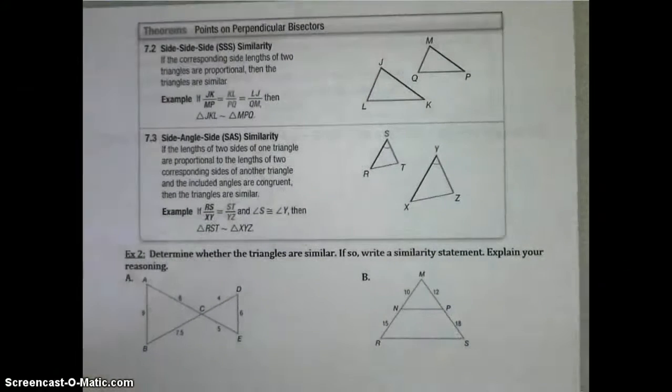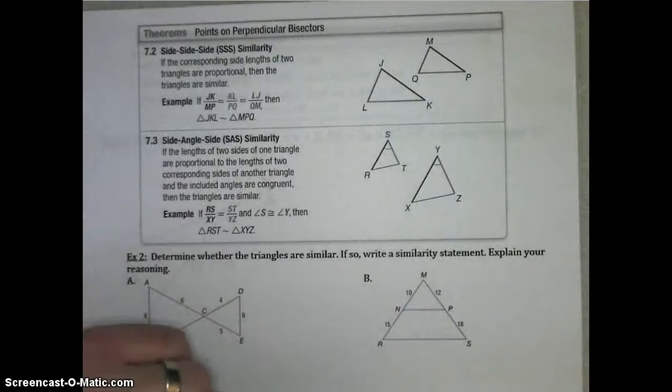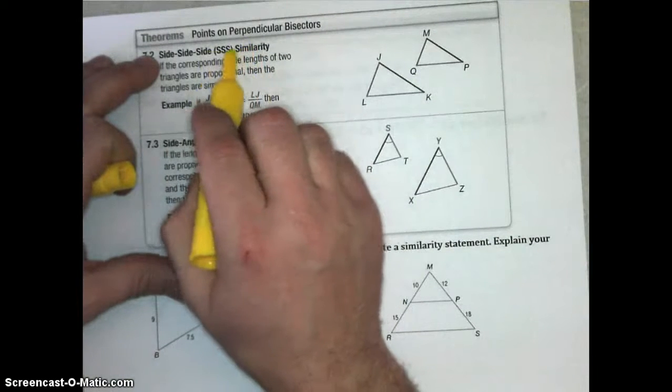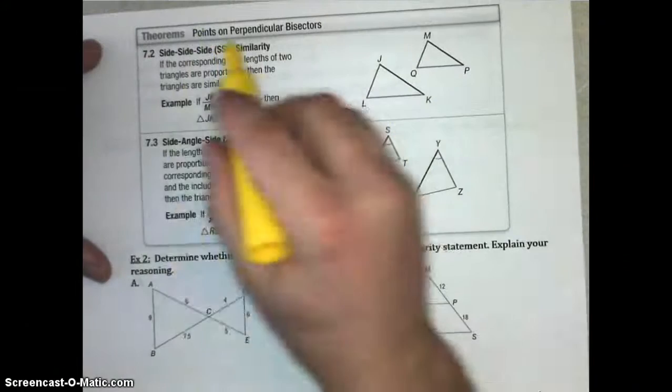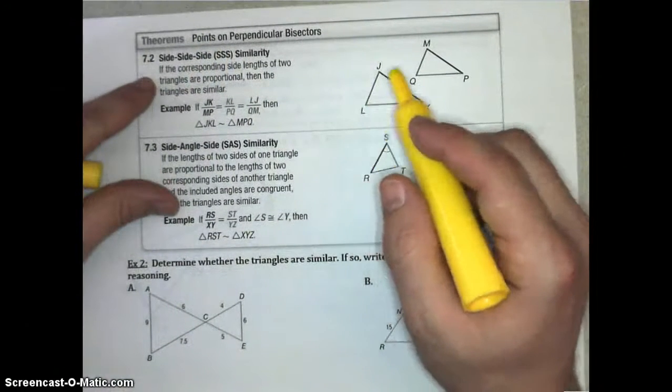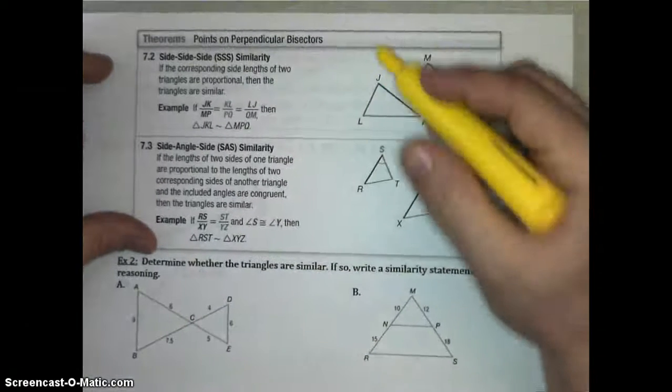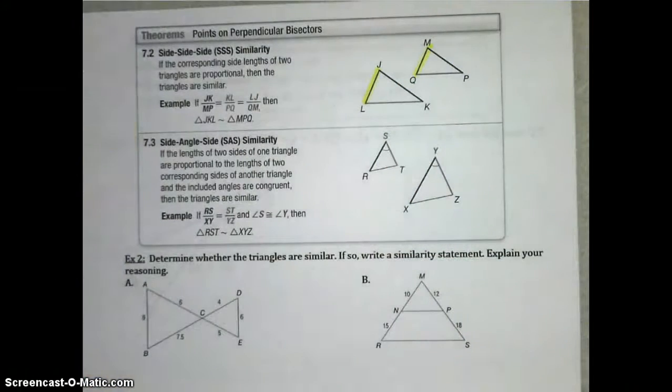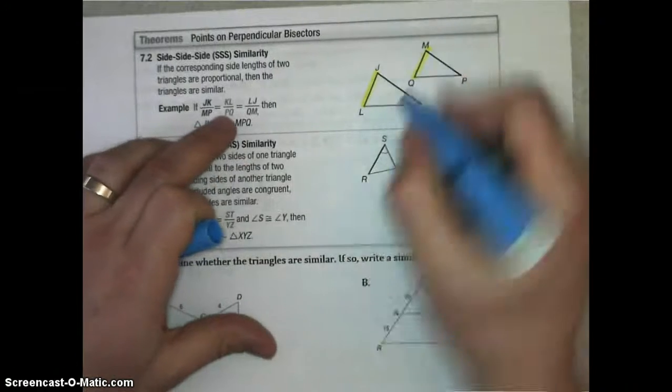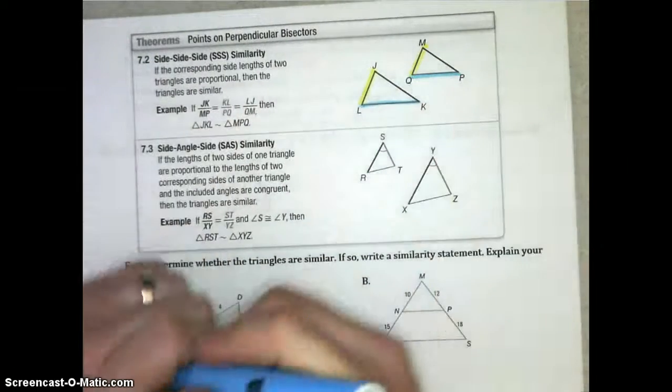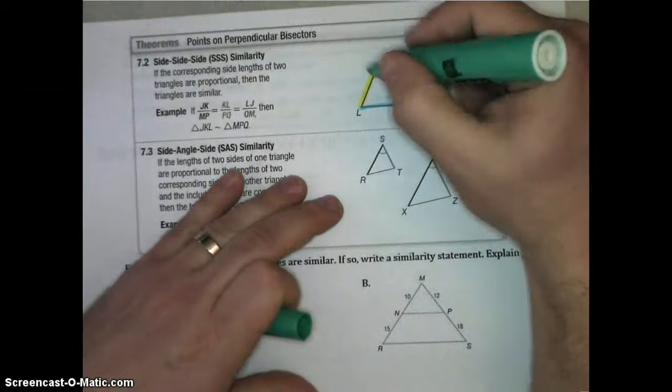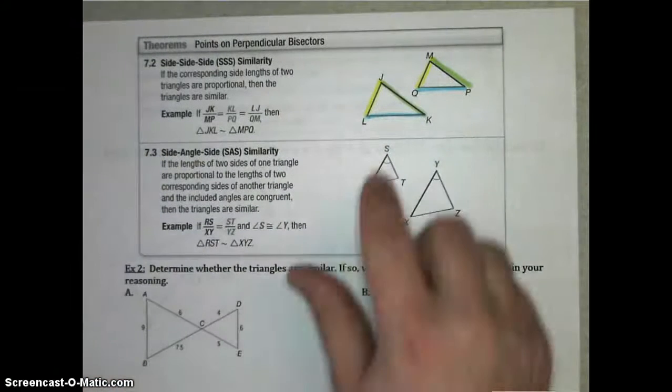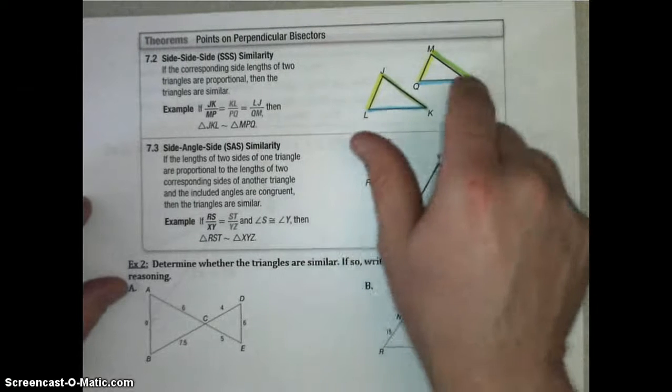All right, then we have two other theorems that will allow us to show that triangles are similar, and that's side-side-side theorem and side-angle-side theorem. Side-side-side similarity, and we do want to specify similarity because we also have side-side-side congruence back from our chapter on congruent triangles, but side-side-side similarity says if the corresponding side lengths of two triangles are proportional, then the triangles are similar. So let's say we had the ratio of LJ to QM. If that was the same ratio as the ratio of KL to PQ, and those were all the same ratio as JK to MP, if all three of those ratios are the same, then these triangles are similar. Not if they're congruent segments, but if they're proportional segments, then they're similar.